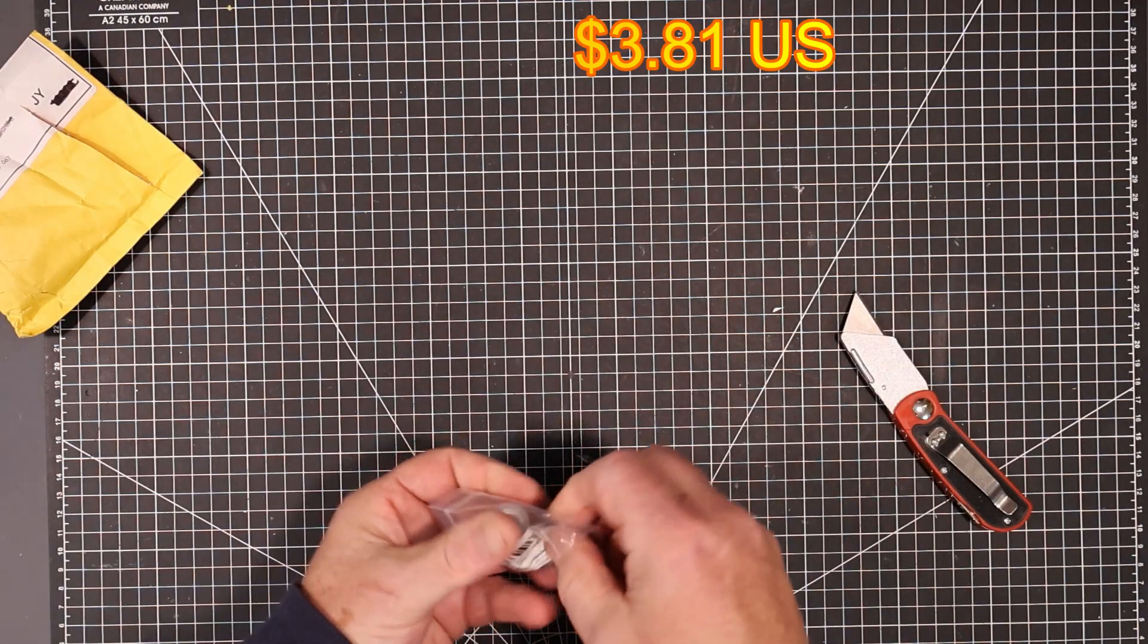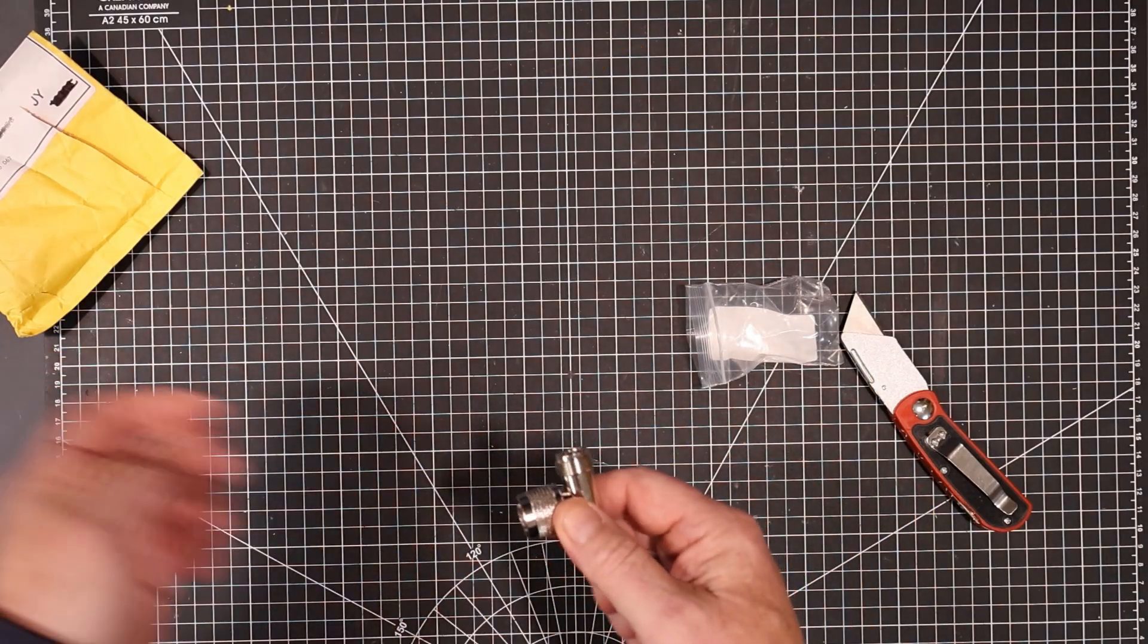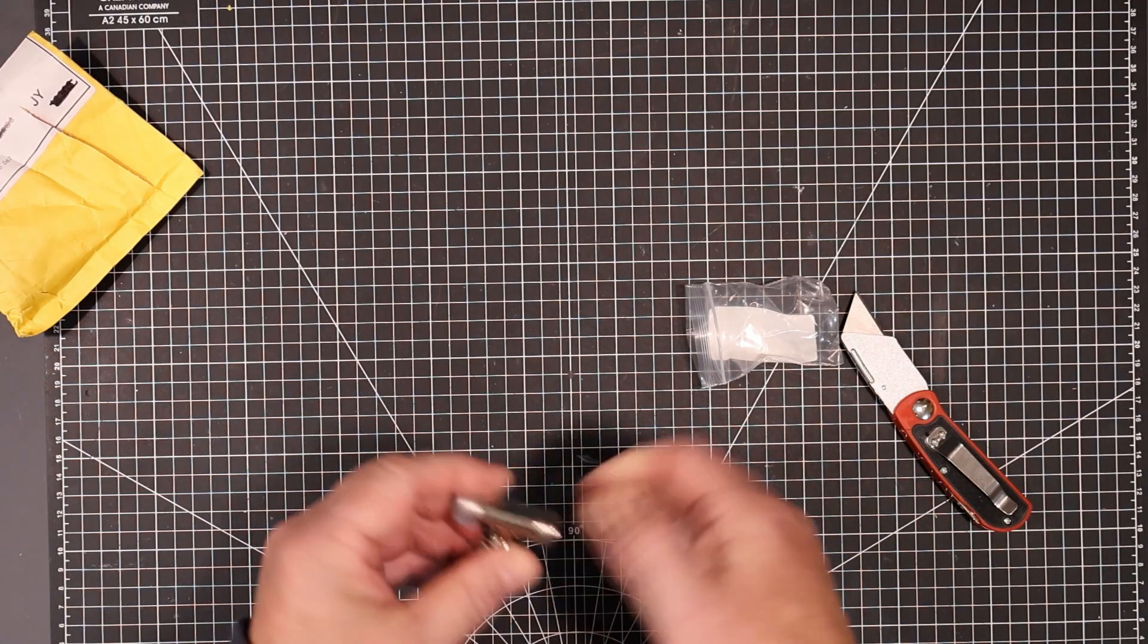It's another adapter. This time it's a type N adapter. So it's a type N T. So similar to that SMA one. But a big blue type N.